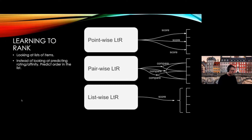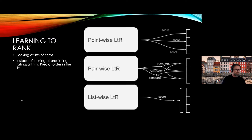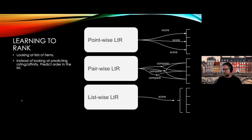Another way to look at recommender systems is as a list problem — learning to rank. Instead of trying to predict a rating, you just want the correct order of items. It doesn't matter if one item is predicted as five or ten, as long as it's ranked above items it should be above and below items it should be below. That way you get a better prediction space where items are ranked more appropriately.